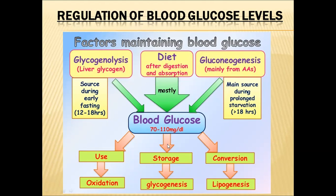After entering the cells, if the cells require energy, glucose enters the oxidation process and releases ATP energy. If additional glucose remains, it participates in glycogenesis forming glycogen. In adipose tissue, excess glucose participates in lipogenesis, resulting in the formation of lipids. These three processes help decrease blood glucose levels when they are above the normal range.